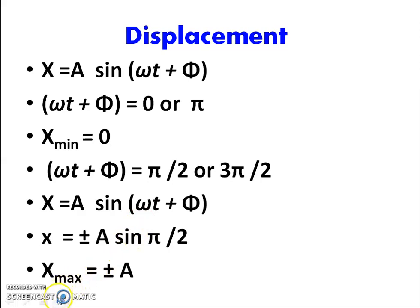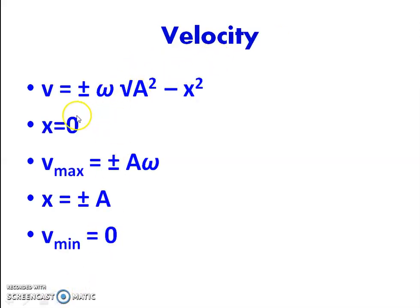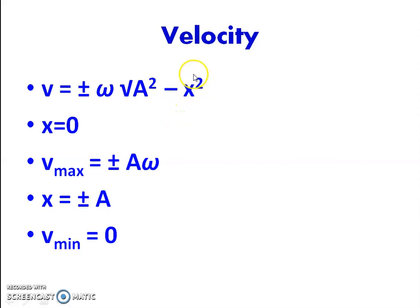We can use the equation of velocity: v = ±ω√(A² - x²). If we put the value of displacement x equal to 0, the particle is at the mean position. At x = 0, velocity becomes v = ±ω√(A²), giving a maximum value of ±ωA. At the two extreme positions, x = ±A, the velocity reaches its minimum.